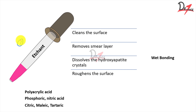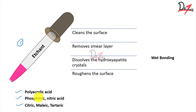The first one in the list is the etchant. These are the acids that remove the enamel rods to create micro and macro tags. They can be polyacrylic acid, phosphoric acid, nitric acid, citric acid, malic acid, or tartaric acid — any of these can be used depending on the brand. The etchant cleans the surface, removes the smear layer, dissolves the hydroxyapatite crystals, and roughens the surface.